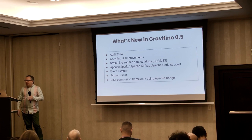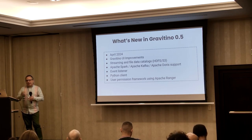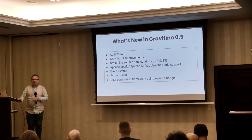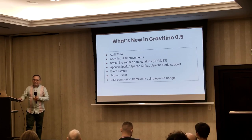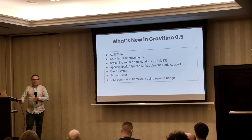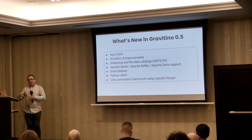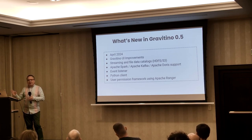Version 0.5 was released in April. Again, we had some improvements to the UI. We added support for Spark, Kafka, and Doris. We also added a Python client — initially we just had a Java client, and Gravitino itself is written in Java, but a lot of people in this space use Python so it made sense to create a Python client. We were also getting requests from external companies using this to have some sort of security mechanism, so we built in a permissions framework. Version 0.5 was the first iteration of that, and it uses Apache Ranger.